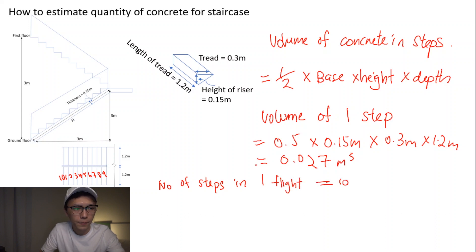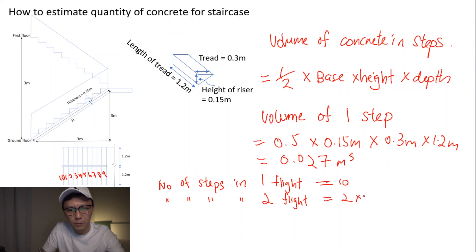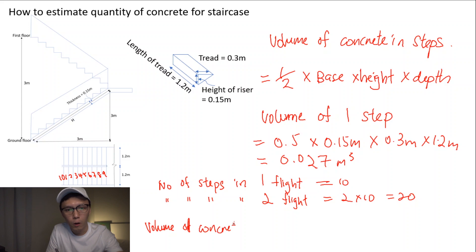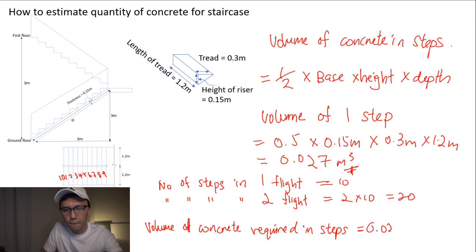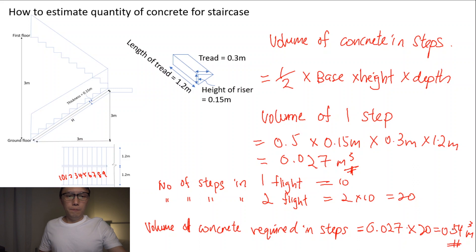We have 10 steps per flight, and the number of steps in two flights is 2 times 10, which equals 20 steps. The total volume of concrete required for all the steps equals 0.027 cubic meters times 20, which gives us 0.54 cubic meters. This is the total volume of concrete for all the steps.